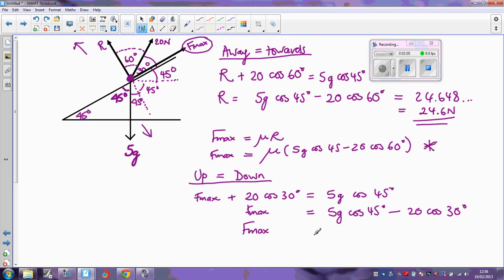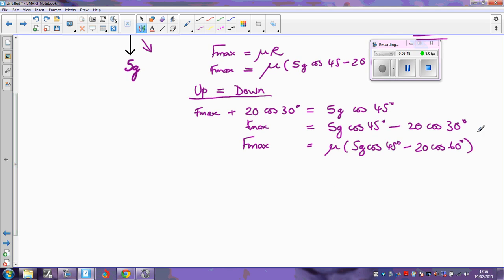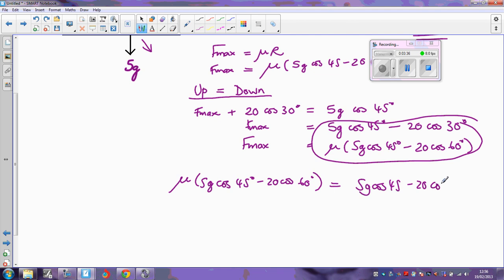I also know that f max is equal to mu multiplied by 5g cos 45 minus 20 cos 60 degrees. And I've now got two different expressions for f max. I can just put these two expressions equal to each other. So I now know that mu times 5g cos 45 minus 20 cos 60, must equal 5g cos 45 minus 20 cos 30.